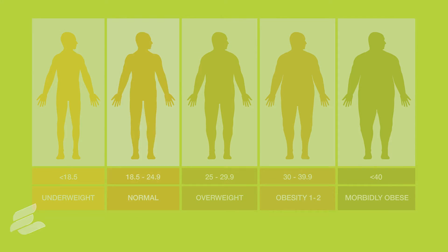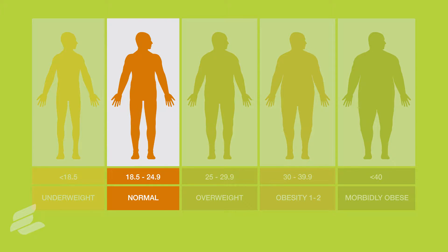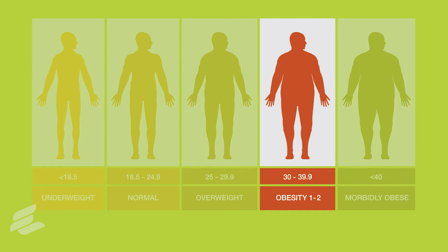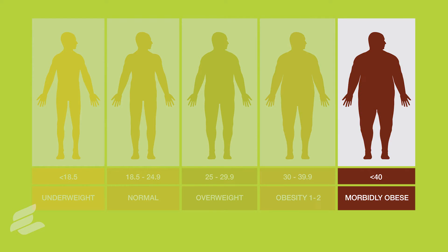There are different categories of BMI. A healthy weight is a BMI of 19 to 25. A BMI of 26 to 30 is considered overweight. A BMI over 30 to 35 is the first part of obesity, so we call it Obesity 1. 35 to 40 is Obesity 2.